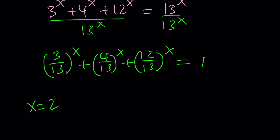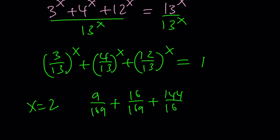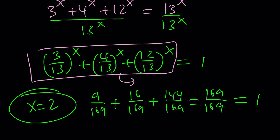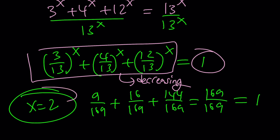If x equals 2, we get 9/169 plus 16/169 plus 144/169, which is 169/169, equal to 1. So that's a solution. And there are no other solutions. The reason is that the left-hand side is a decreasing function — each term has a base less than 1. Adding decreasing functions gives a decreasing result, since the sum of negative derivatives is negative. The right side is the constant 1, a horizontal line. A decreasing function and a horizontal line can only intersect at a single point, and that happens at x equals 2.